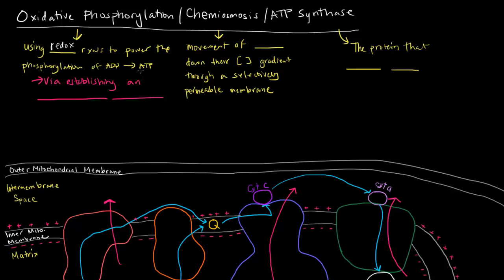And how do we actually do that? We do it via establishing what we mentioned earlier, an electrochemical gradient. Specifically a pH gradient with the H pluses.